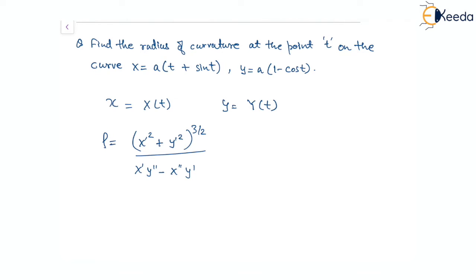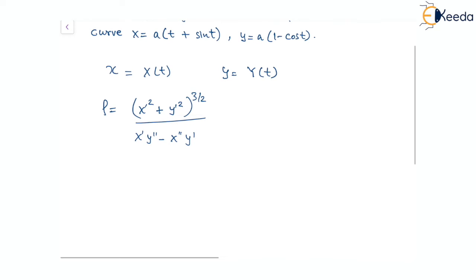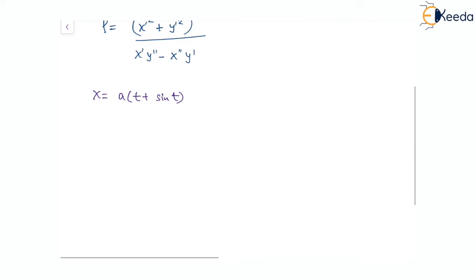This means we will have to find the first and second derivatives of both x and y with respect to t. Starting with x: x equals e times of t plus sin t, so x-dash, that is differentiation of x with respect to t, will be e times of 1 plus cos t.